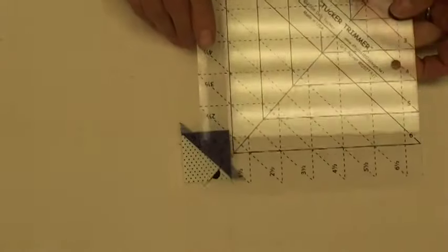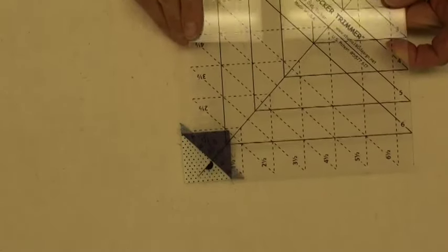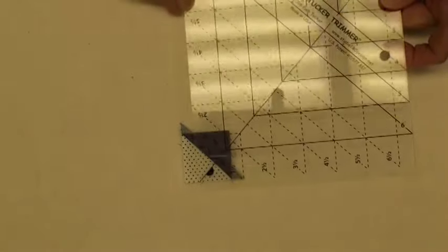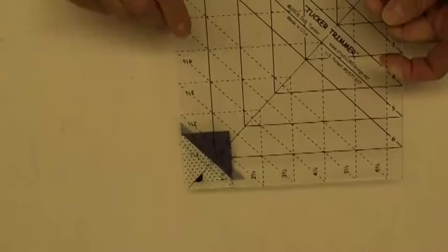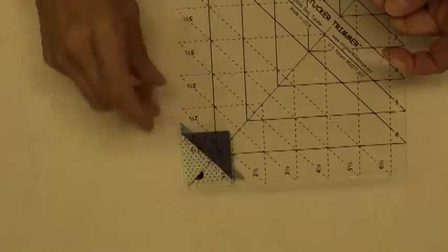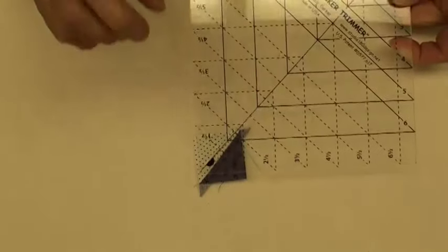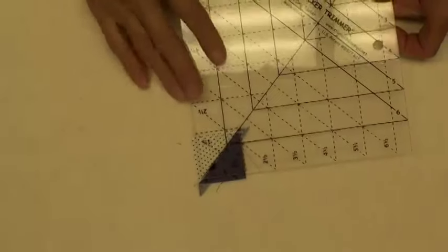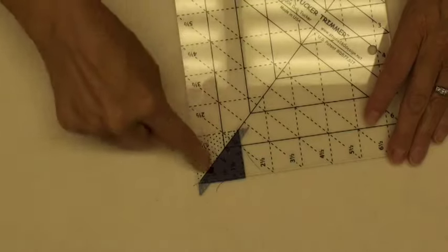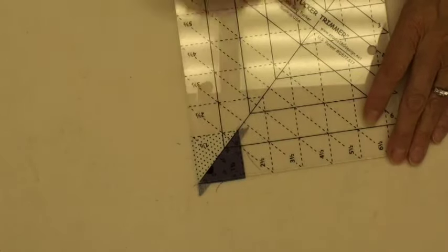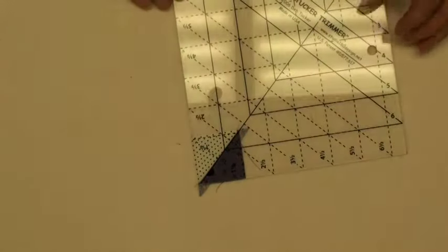One more ruler to show you is the Tucker trimmer. This is Deb Tucker's Studio 180 Designs. She makes marvelous rulers. So this little ruler has lots of lines that we can follow to make our cutting really accurate. So this is going to be trimmed at one and a half inch, finished at one inch. So we're going to trim it at this one and a half inches. So I'm going to lay that ruler on there. See how I have my 45 degree angle going down and here is my one and a half inch line here. I would trim, trim, rotate and trim my other two sides.